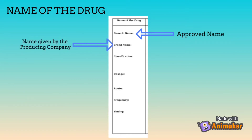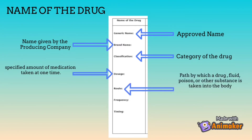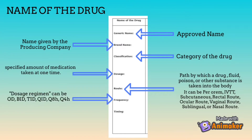The route of administration is the path by which a drug, fluid, or other substance is taken into the body. It can be per orem, IVTT, subcutaneous, rectal, ocular, vaginal, sublingual, or nasal route. Frequency is called the dosage regimen. Frequencies can be OD, BID, TID, QID, Q8H, or Q4H.